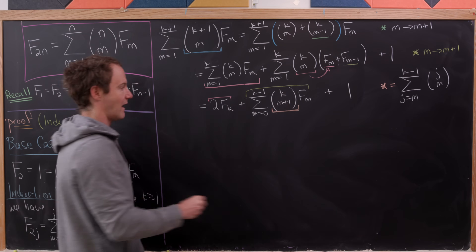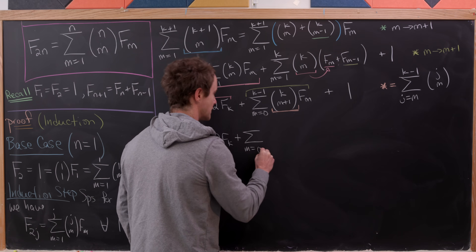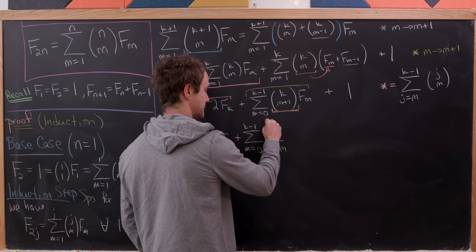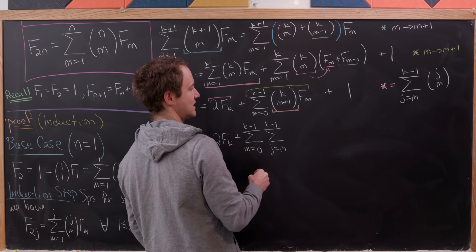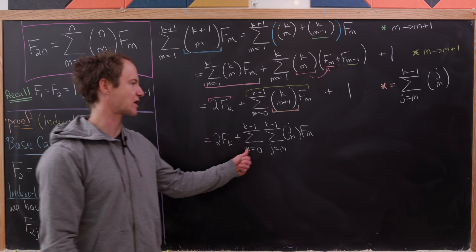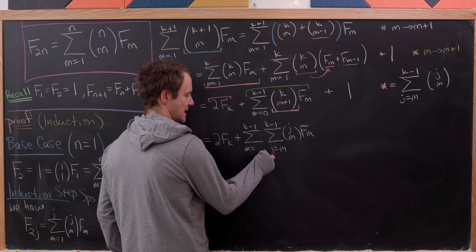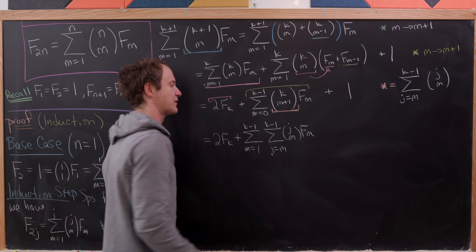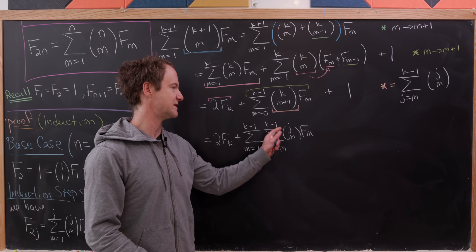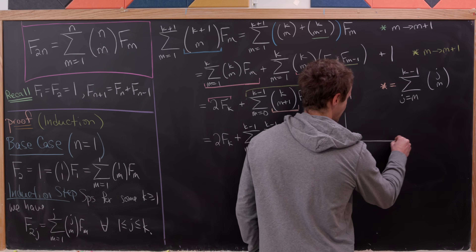Rewriting what we have, we get 2 times f sub k plus the sum as m goes from 0 to k-1, times the sum as j goes from m to k-1 of j choose m times f sub m, plus 1. I'll now change the lower limit of the outer sum from 0 to 1, since the 0th Fibonacci number is 0 by definition, making that term vanish.